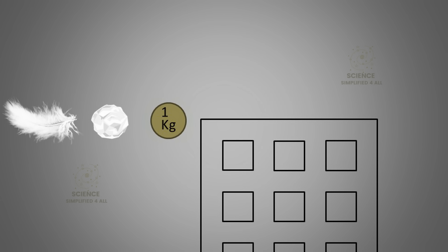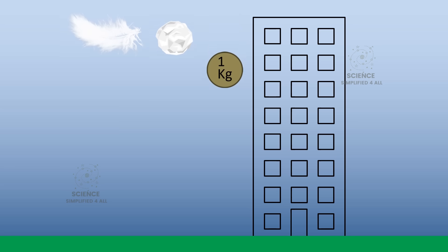But what if we drop something like a paper ball or a sponge ball or even a feather from that same building, along with the iron ball? In that case, they will not fall at the same speed. The paper, sponge, and feather will all fall much slower. The rule that says everything falls at the same speed does not seem to apply here. And that confuses many people.